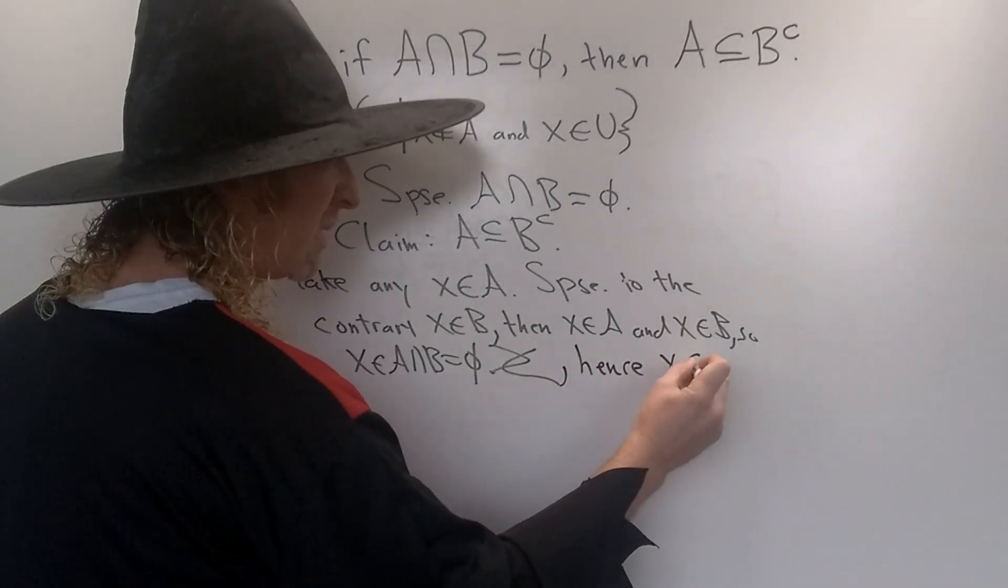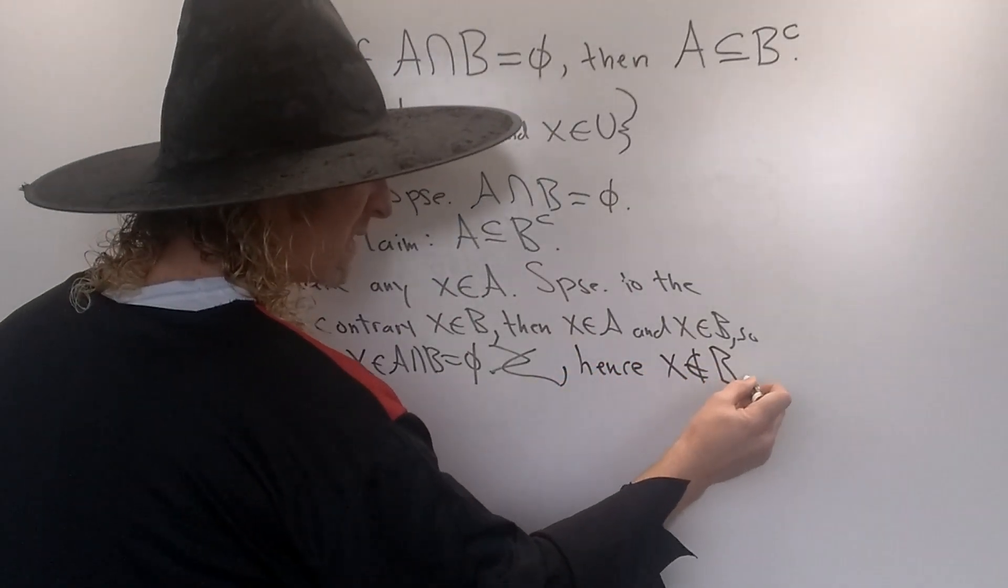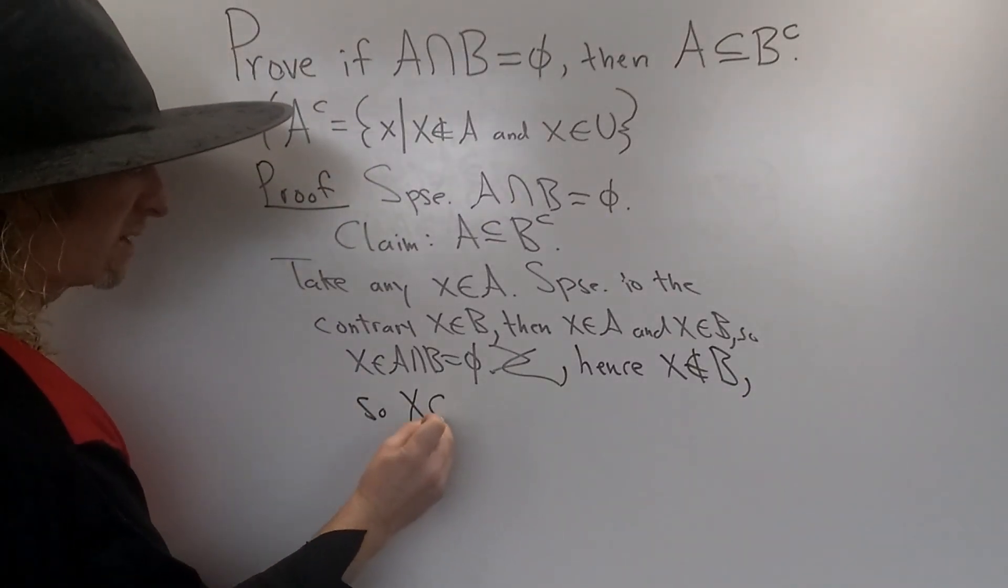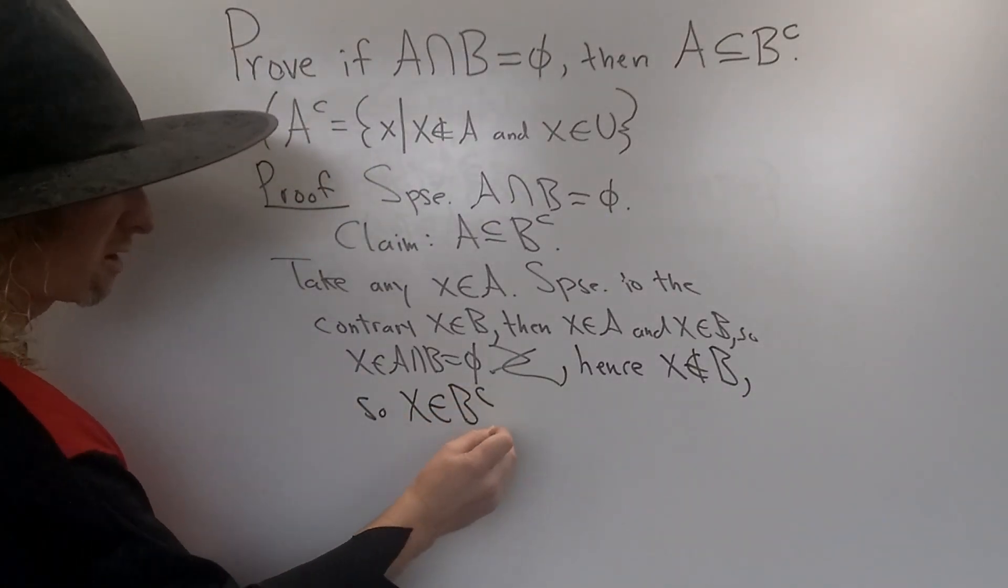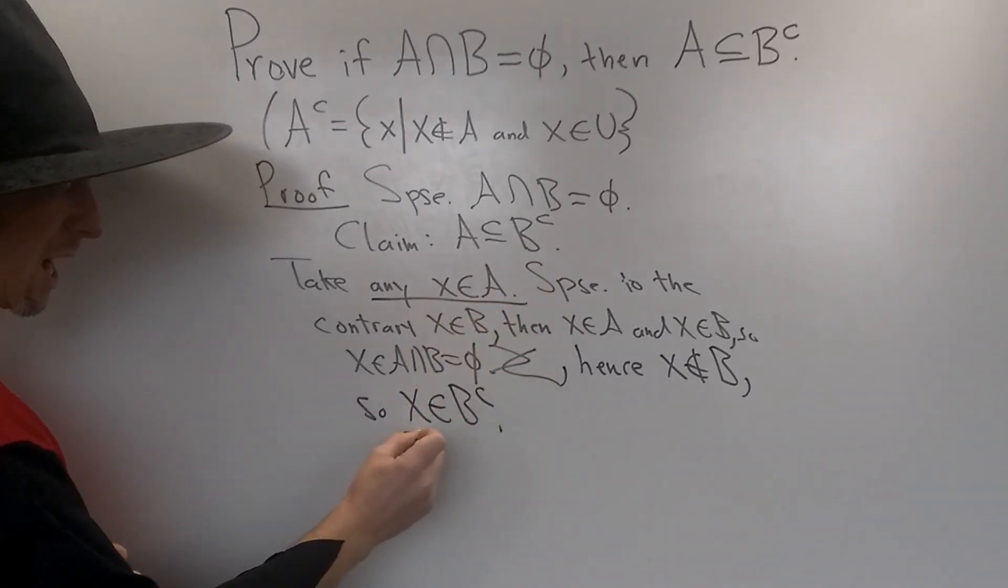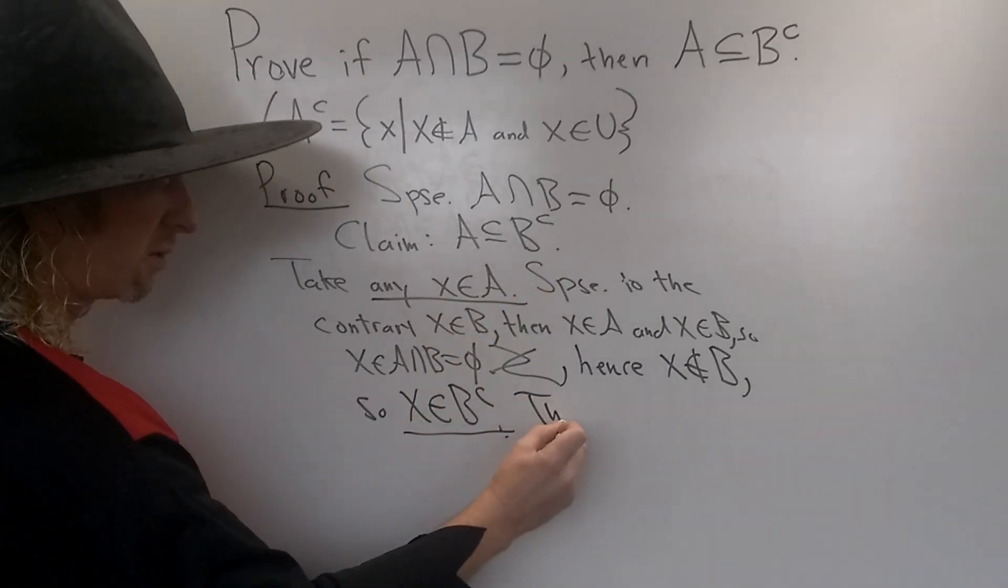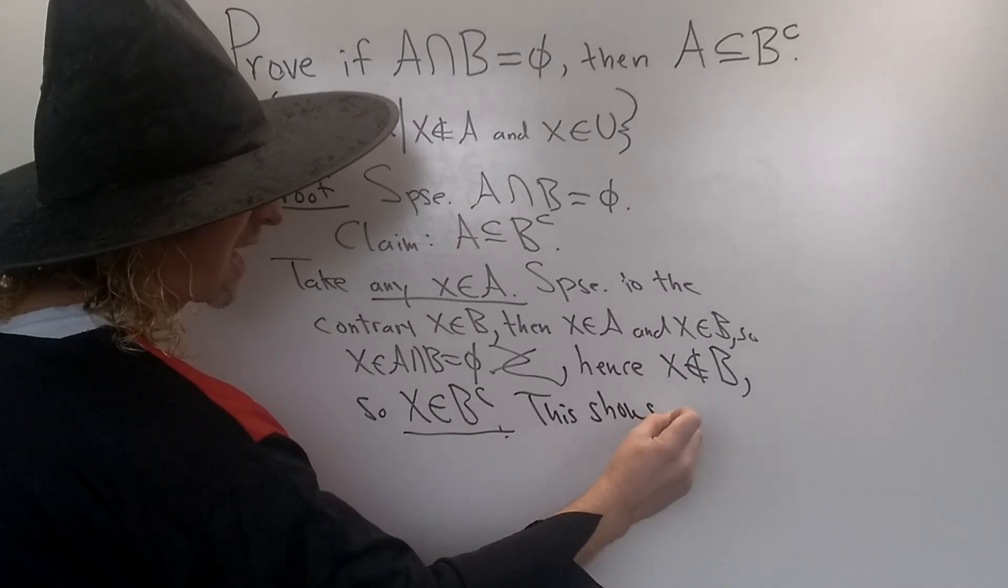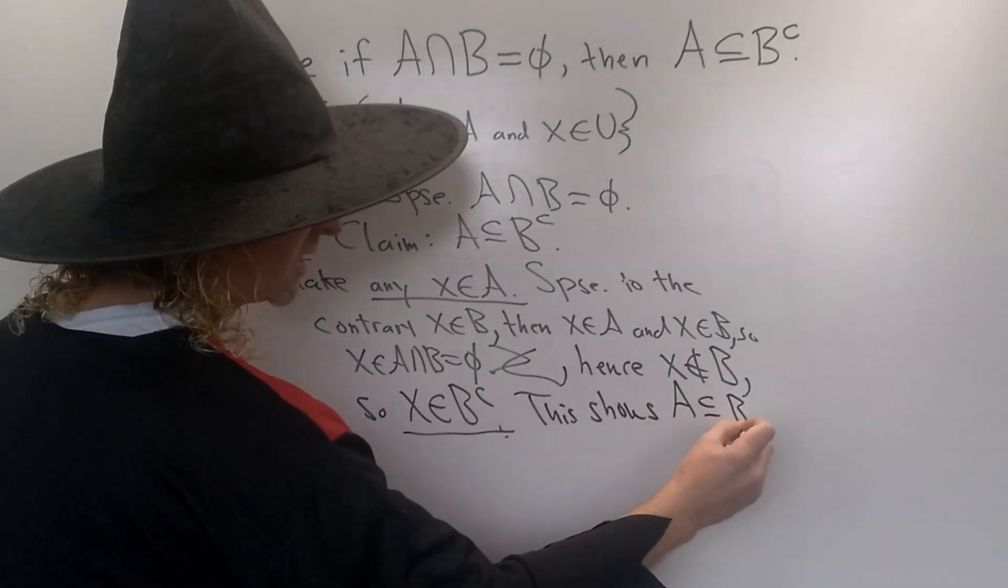Hence, x is not in B. But if it's not in B, that means that it's in the complement of B. So we started with an x in A. We showed it's in the complement. This shows, this shows that A is a subset of B complement. Boom! And that's it.